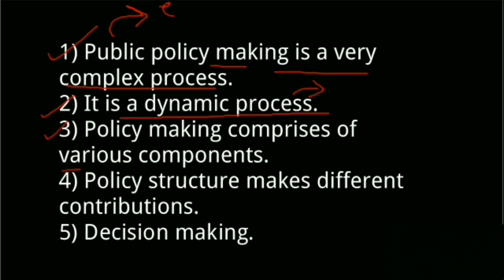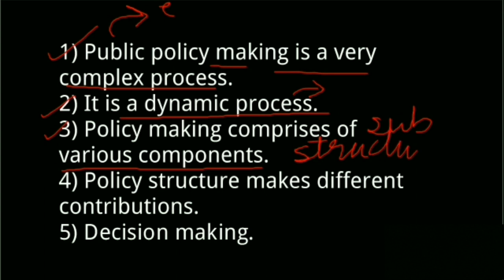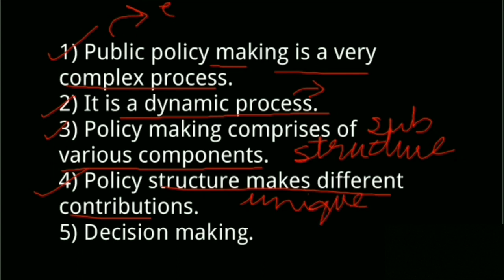Policy making changes with time and the sequence of its sub-processes and phases vary internally and with respect to each other. Policy making also comprises various components — the complexity of public policy making is an important characteristic. Public policy formulation often involves a great variety of substructures, and the identity of these substructures and the degree of their involvement vary because of different issues, circumstances, and societal values. Every substructure makes a different and sometimes unique contribution to public policy.